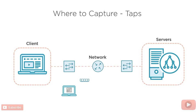It's also possible to capture data using a tap. A tap is a hardware device that physically goes in line on a copper or a fiber connection and allows us full wire speed access. This is the best way to capture packets. However, it's also the most expensive and may not be possible depending on our budget. As a best practice, it's a good idea to install taps at key locations on the network ahead of time so that packets can be captured at any time for analysis.